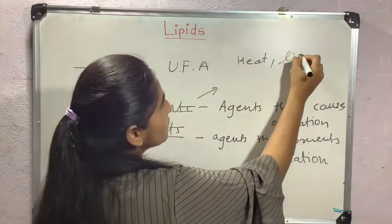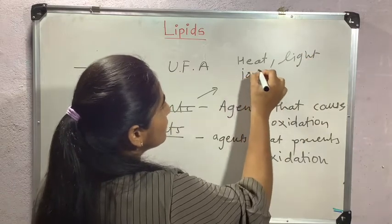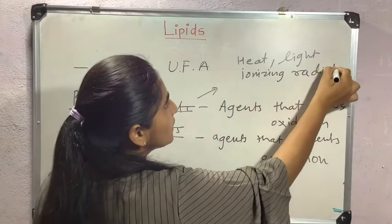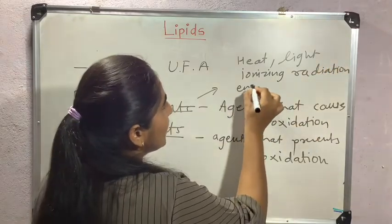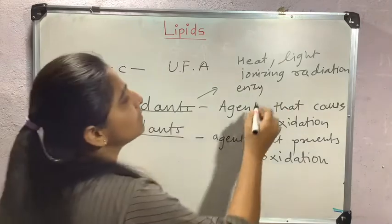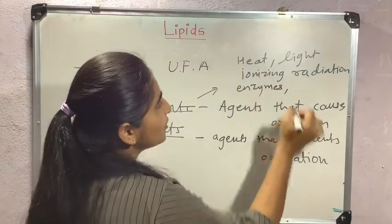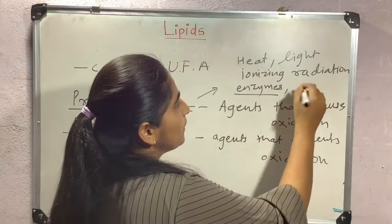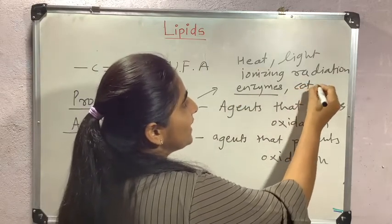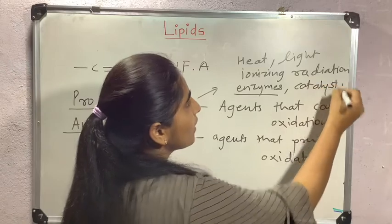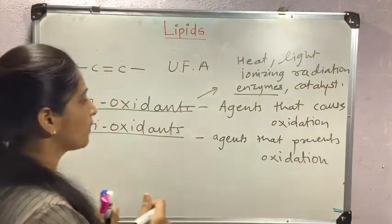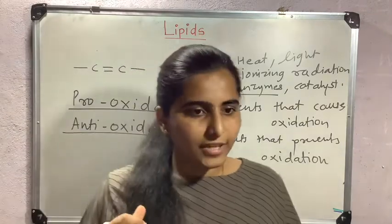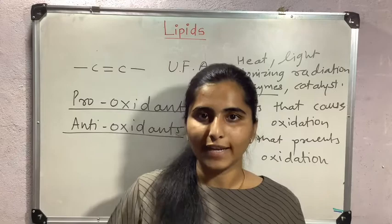Pro-oxidants include heat, light, ionizing radiations, enzymes like lipoxygenase — the enzyme that causes hydrolysis of lipids — metal catalysts, acids, bases, and water. One more example is vegetable oil, which contains more unsaturated fatty acids.